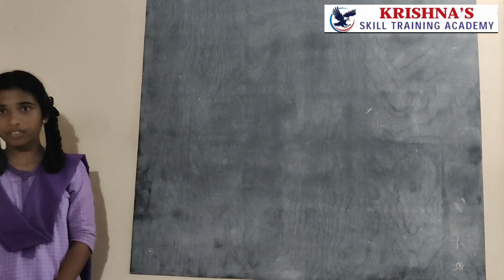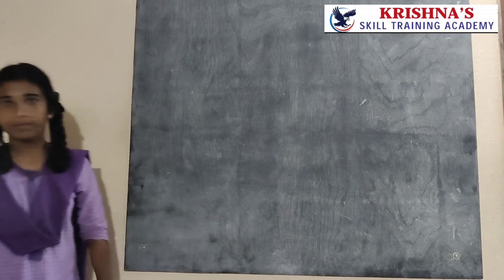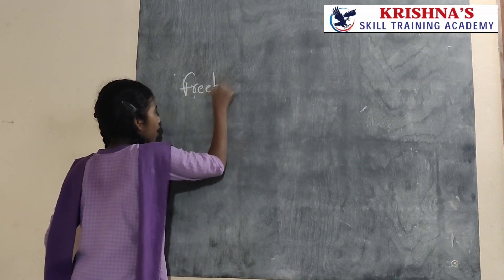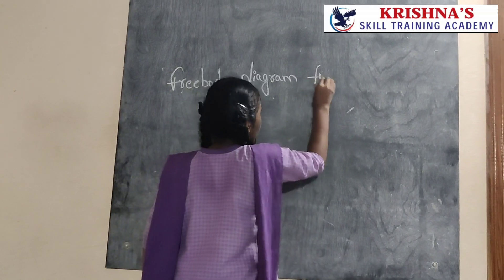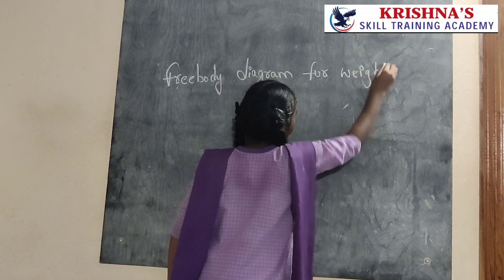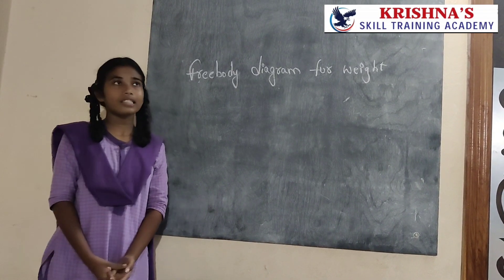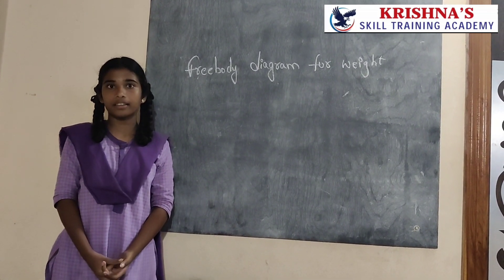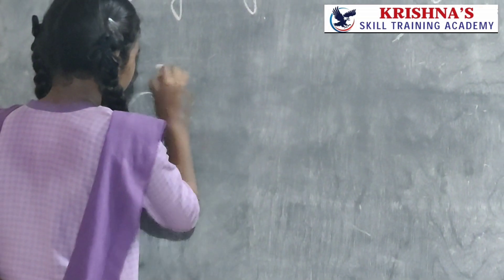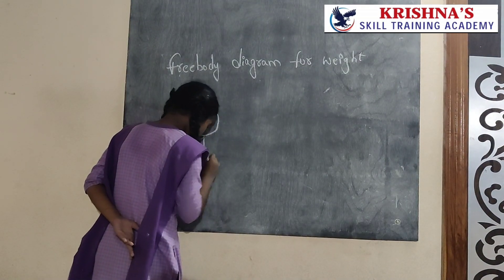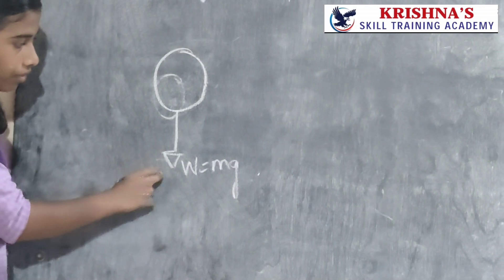Good evening to all. I am Pujita in front of you. I am studying 9th standard in Krishna's IIT Academy. Now I am going to say about free body diagram for weight. The acceleration due to gravity is 9.8 metres per second squared on the earth. Now let us see an example for free body diagram for weight. We can draw one circle on the surface — W is equal to mg.